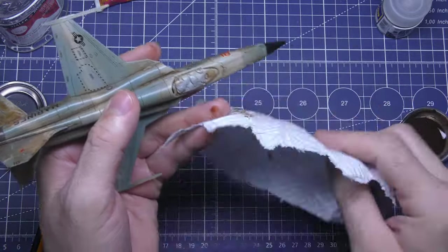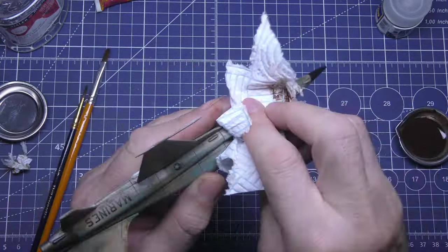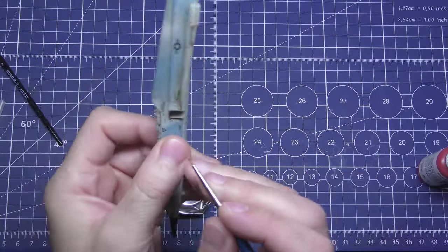But you can already see on the wings there and I've only just started clearing it off. It comes off very easily. And then to get into all the nooks and crannies, I just use cotton buds.